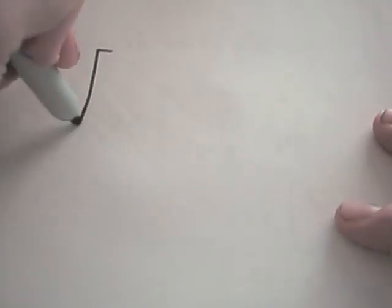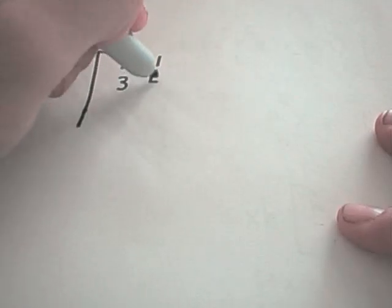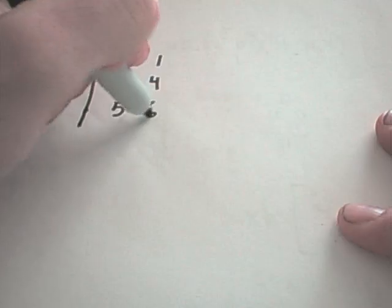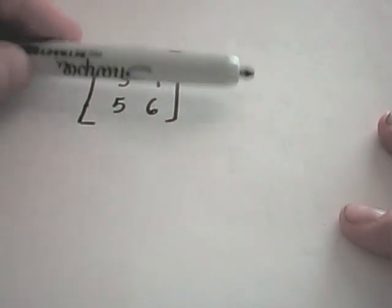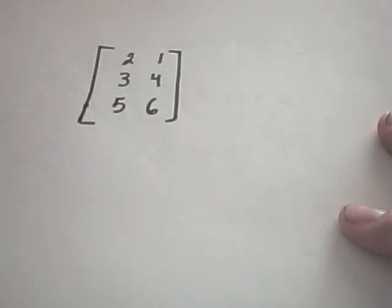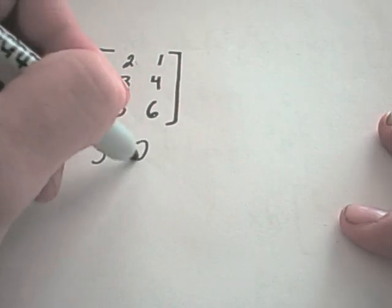And the first thing to talk about is matrix size. So suppose I have the following matrix: 2, 1, 3, 4, 5, 6. The size of this matrix is the number of rows. So this matrix has 1, 2, 3 rows and only 2 columns. So we say this is a 3 by 2 matrix.